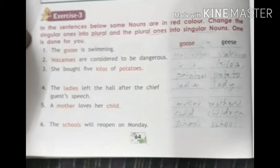Next slide. Exercise number 3: in the sentences below, some nouns are in red color. Change the singular ones into plural and the plural ones into singular nouns. One is done for you — the goose is swimming, so we change goose into geese — G-E-E-S-E.